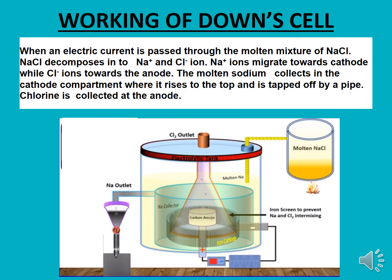Now let's discuss the working of the Down Cell. Molten NaCl is used as the electrolyte. When electric current passes through this electrolyte, it decomposes into sodium ions and chloride ions. Sodium ions, being positively charged, migrate towards the cathode, which is the negative electrode, where they gain electrons and convert into sodium metal. Chloride ions, being negatively charged, move towards the anode, the positive electrode, where they lose electrons and convert into chlorine gas. So sodium is obtained at the cathode and chlorine is obtained at the anode.